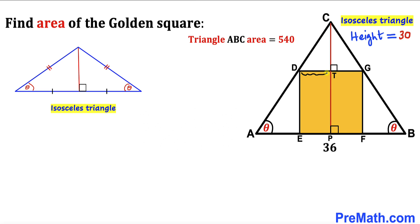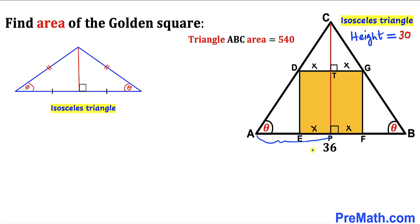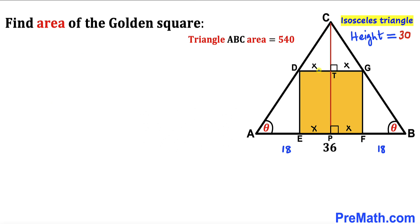If I call length DT as x, then TG equals x as well. Likewise EP equals x and PF equals x. Since the whole length AB is 36, AP equals half of that, which is 18, and PB equals 18 as well. The side length DG of the square equals x plus x, giving us 2x. Since it's a square, all side lengths equal 2x.